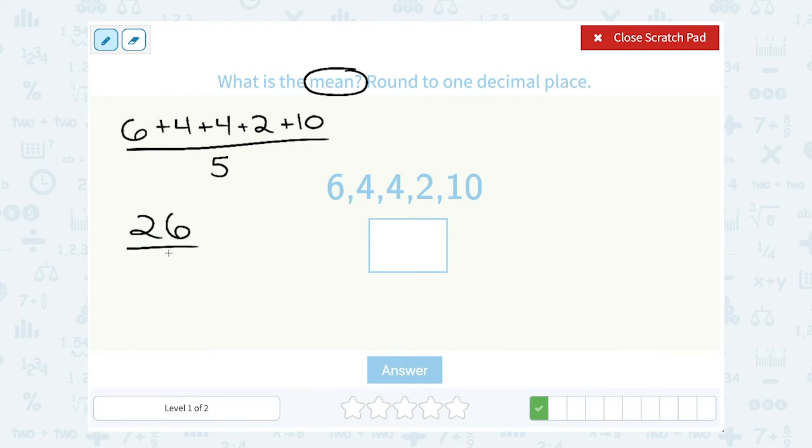And then I'm going to divide by 5 since there were 5 numbers. Well, 26 divided by 5 gives me 5.2 for my mean or my average.